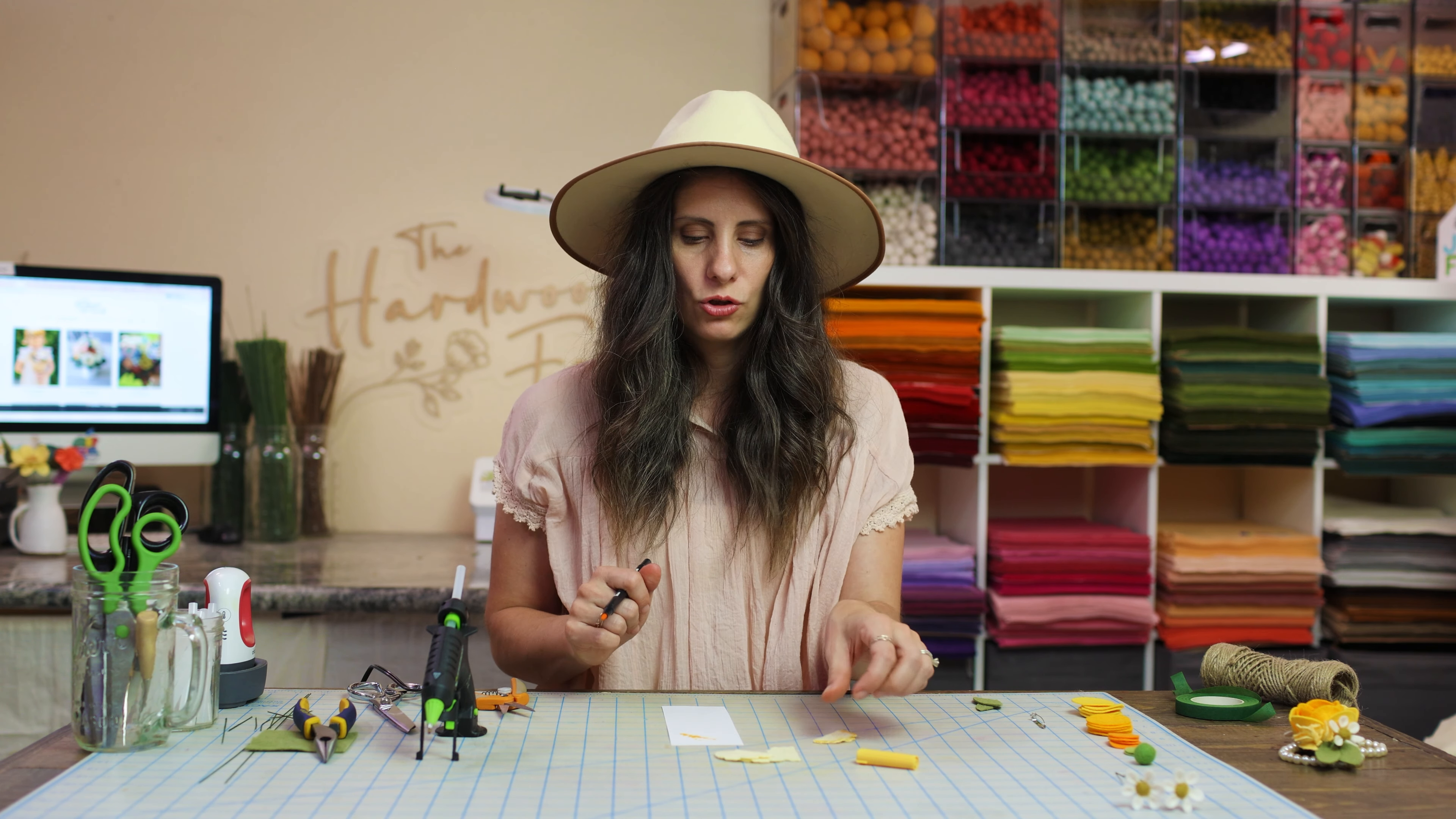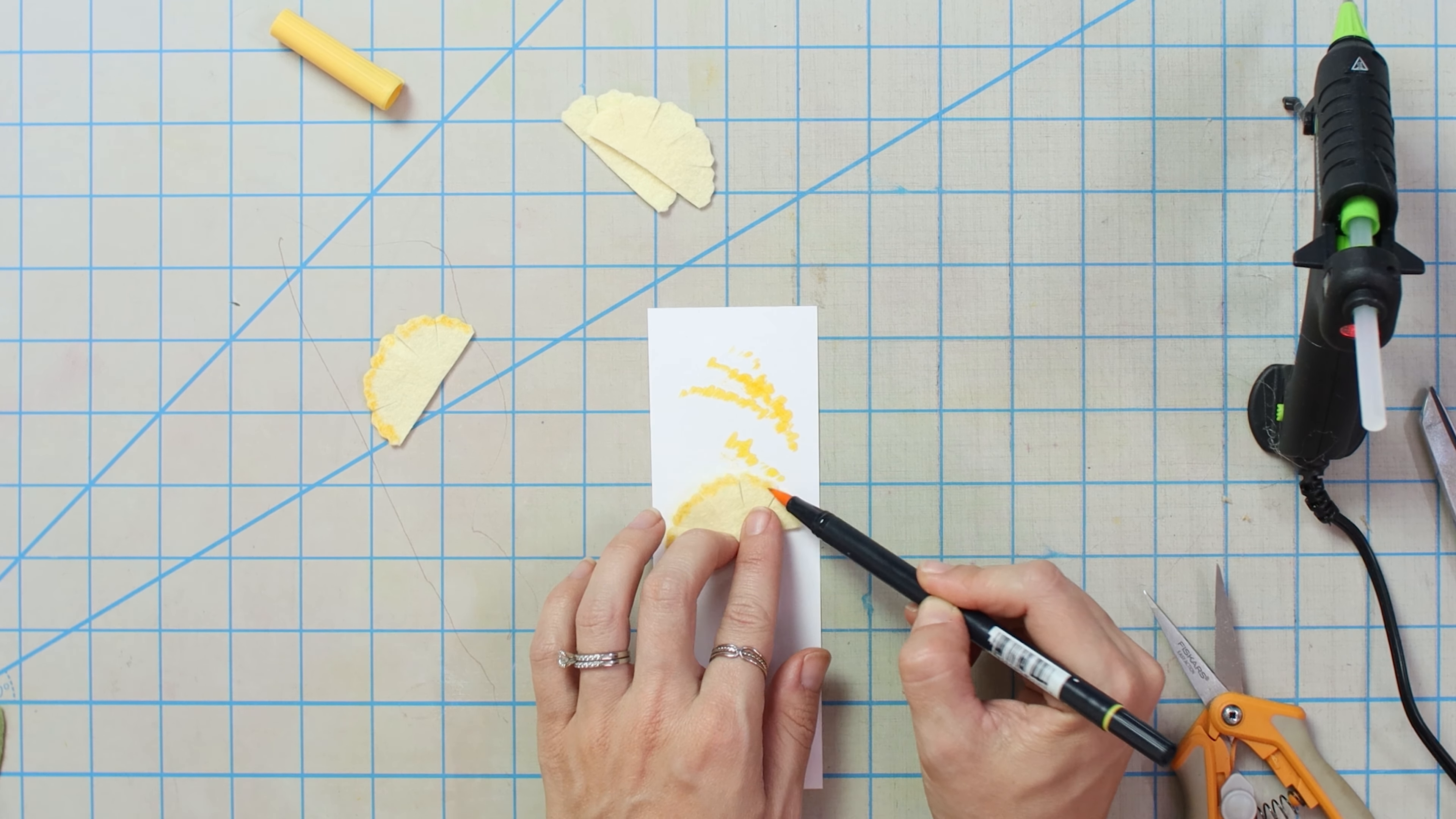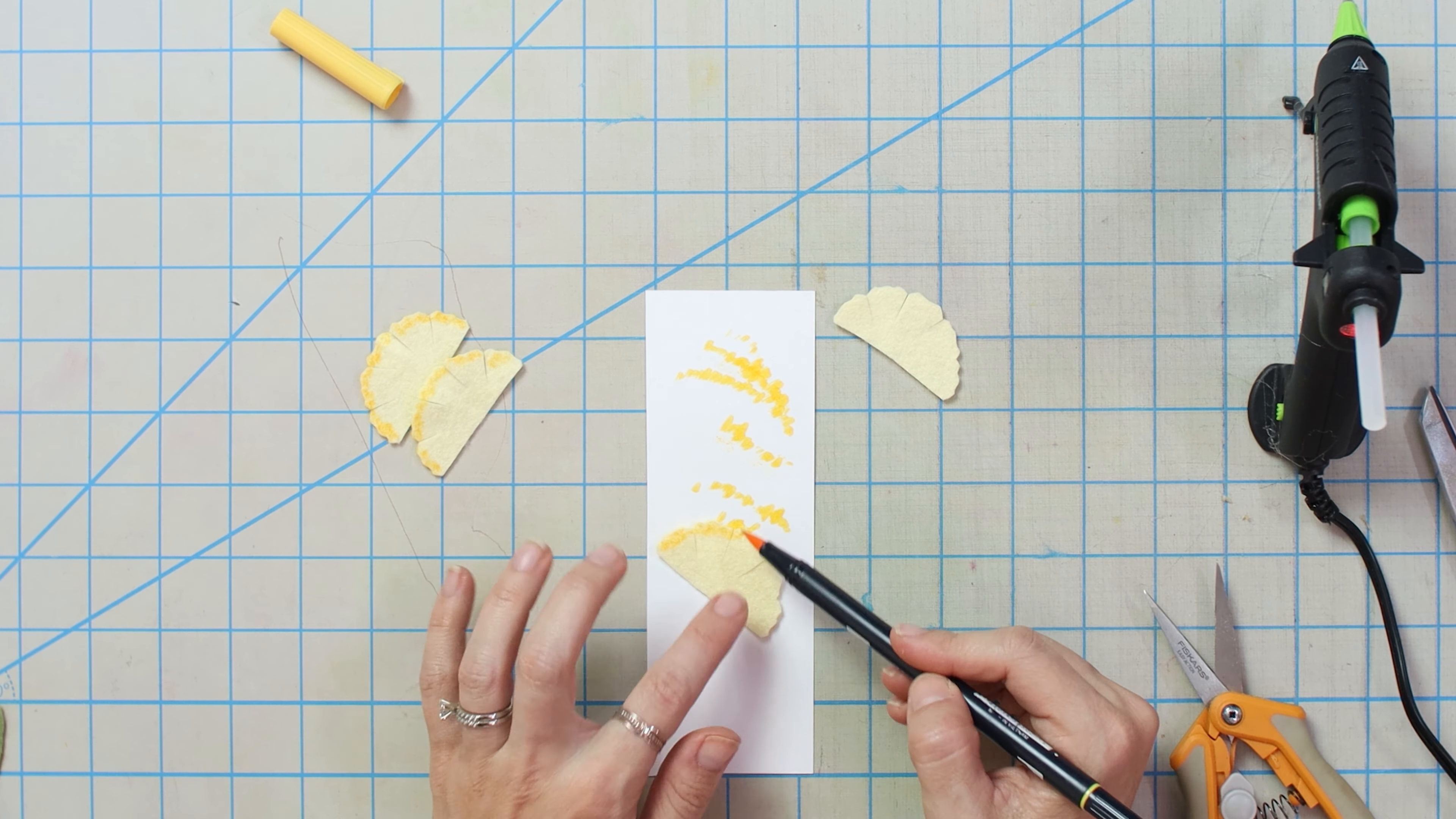You can use pan pastels, you can use watercolors, colored pencils, even Crayola markers are felt tip markers. So if you have got Crayola markers at home, you can use those too. Tombow is great because they've got pretty much every single color under the sun. So that's one reason why I really like using their brand. But Crayola works just as great.